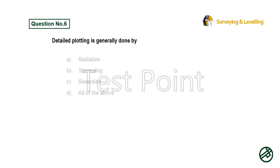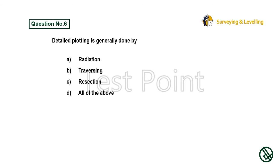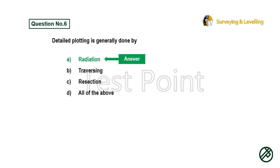Question 6: Detailed plotting is generally done by — Option A: Radiation. Option B: Traversing. Option C: Resection. Option D: All of the above. Answer is Option A: Radiation.